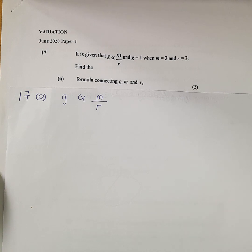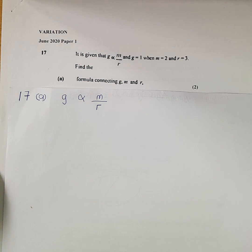It is reading: it is given that G varies as M over R. G is equals to 1, M is equals to 2, and R is equals to 3. Find the formula connecting G, M, and R.